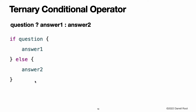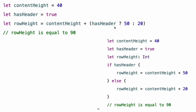The ternary conditional operator is shorthand for an if-else code block. Here is an example which calculates the height for a table row. The row height should be 50 points taller than the content height if the row has a header, and 20 points taller if the row does not have a header. The first example's use of the ternary conditional operator means that row height can be set to the correct value on a single line of code, which is more concise. Use the ternary conditional operator with care, however. Its conciseness can lead to hard-to-read code if overused. Avoid combining multiple instances of the ternary conditional operator into one compound statement.